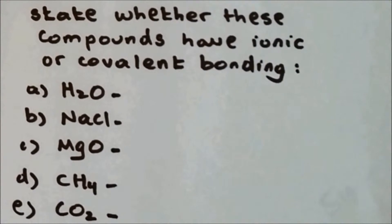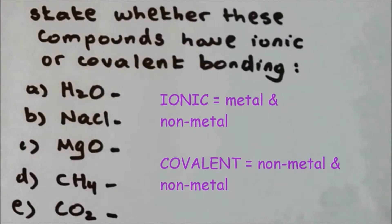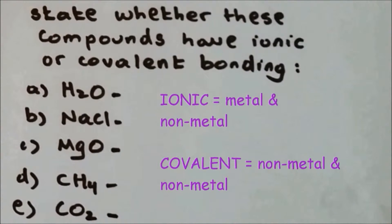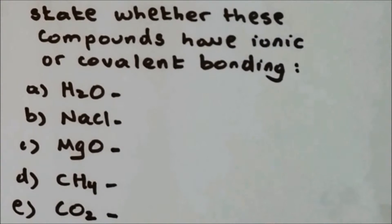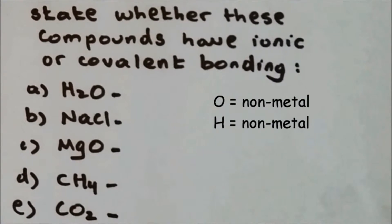Question 3: State whether these compounds have ionic or covalent bonding. Before doing this, you should know that ionic bonding happens between metals and non-metals, and covalent bonding happens between non-metals only. For water, H2O, hydrogen is a non-metal and oxygen is a non-metal, so the bonding in water involves covalent bonding.